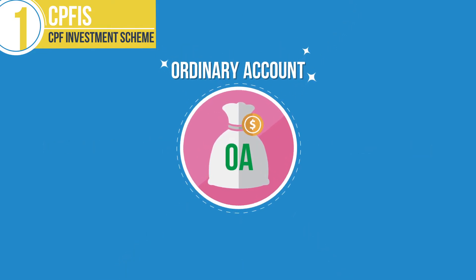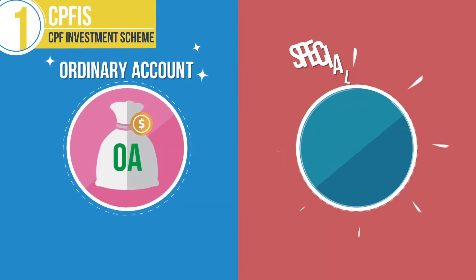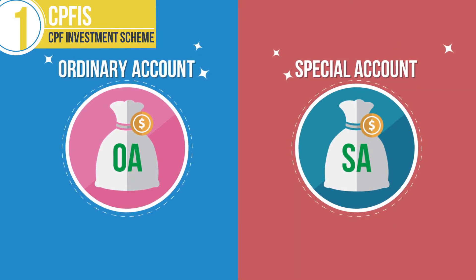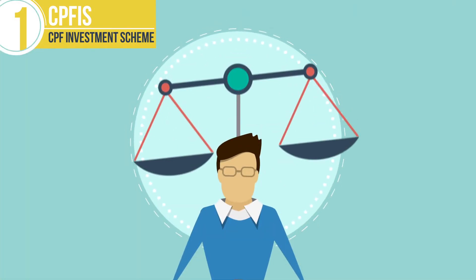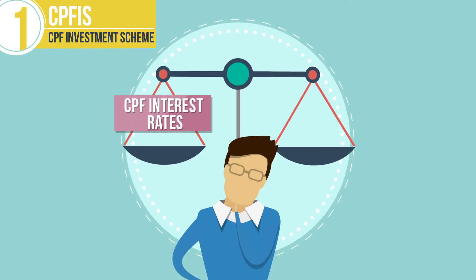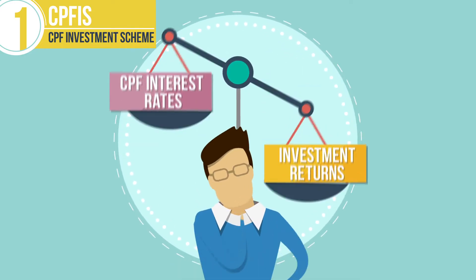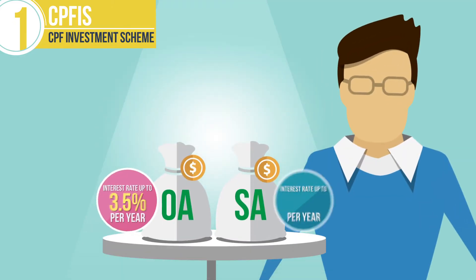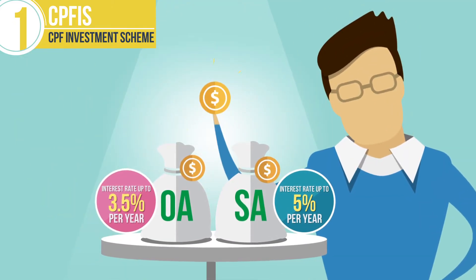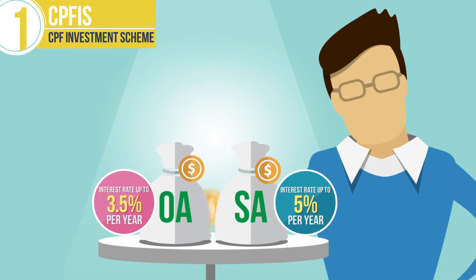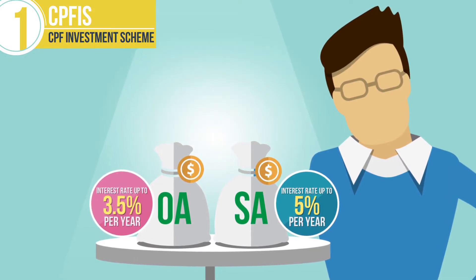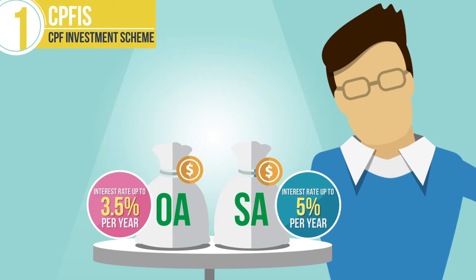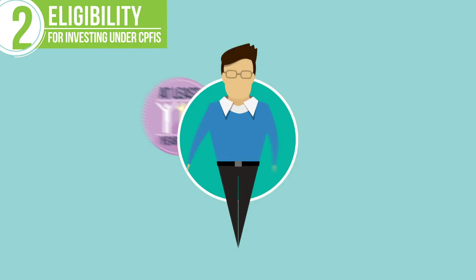The CPF Investment Scheme gives you the option of investing your Ordinary Account and Special Account savings in a wide range of investments. Consider investing your CPF savings only if you are confident of earning more than the current CPF interest rates. Otherwise, you can always leave your CPF savings in your CPF accounts to earn the risk-free interest.